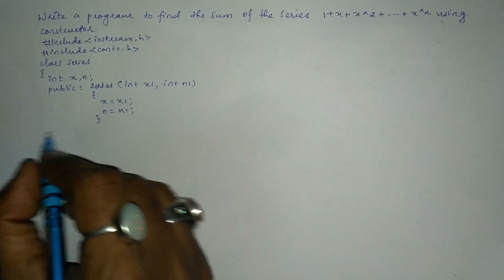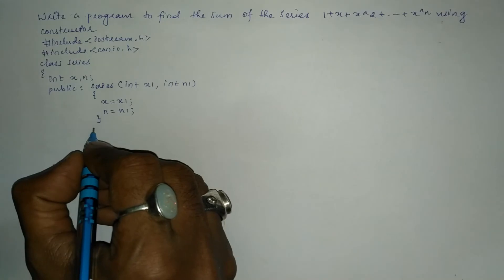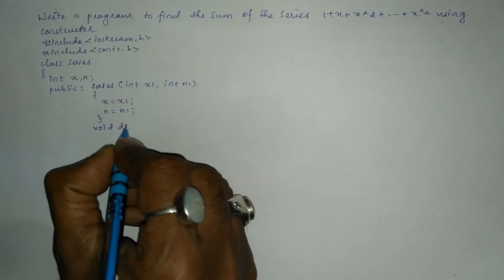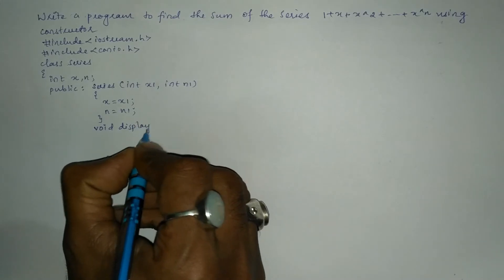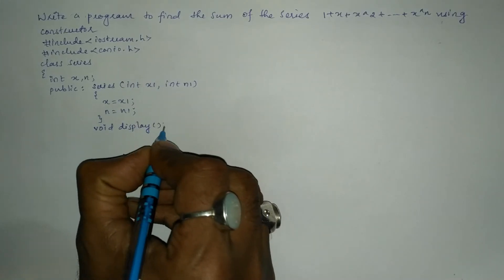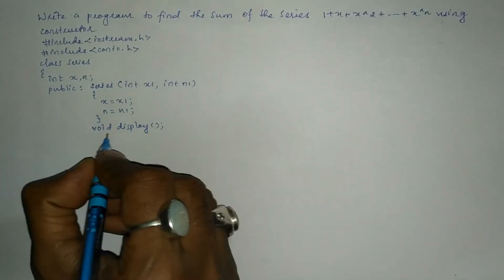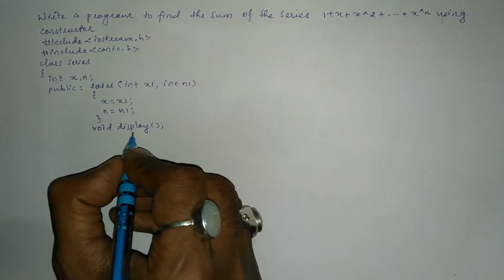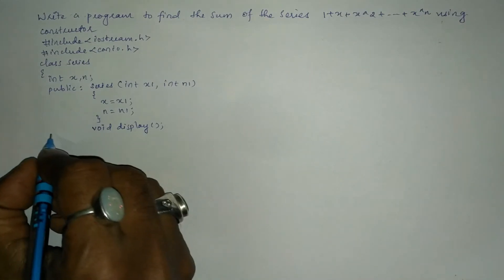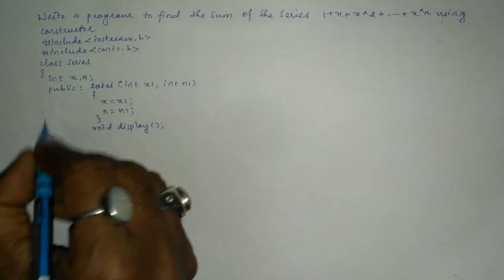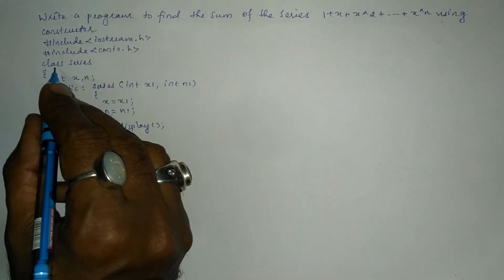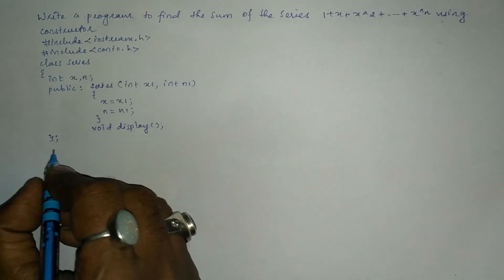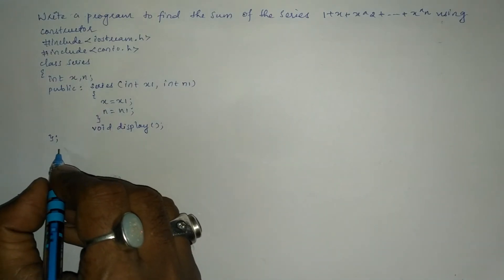Now let us declare one more user-defined function called void display. We are going to declare it here and define it outside the class definition. Then we write the curly closing brace for the class definition and put a semicolon, indicating it is the termination point of the class definition.